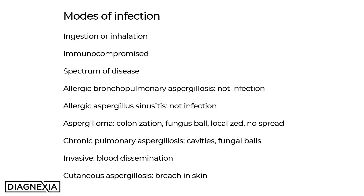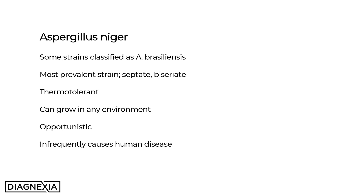Cutaneous aspergillosis results from any breach in the skin — from surgery, trauma, or burns — and local Aspergillus infection is present. As regards Aspergillus niger, some of the more recently described strains have been classified as Aspergillus braziliensis. It is the most prevalent strain in the environment. It is also septate, like Aspergillus fumigatus, and is a biseriate fungus.